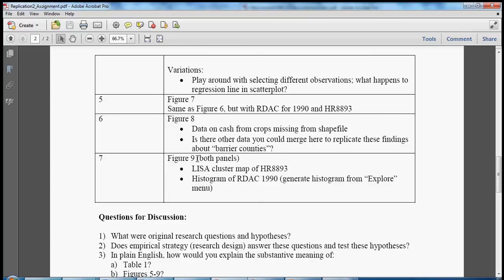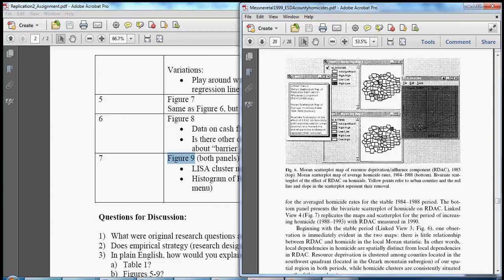You might consider what other data you could collect relatively quickly, say from census or other sources, in order to replicate the similar findings. So let's go to the final replication item, figure nine, and do both panels here. If we look at the article, you'll see that figure nine appears at the very end on page 446.